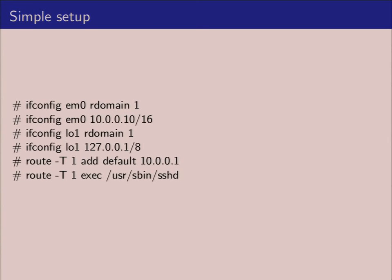We're taking the interface EM0 and declaring it will be part of R-domain 1. By default in OpenBSD, every single interface is in R-domain zero. The reason you set this first is that when you change the interface's routing domain, the question is: what do you do with the existing IP address? In OpenBSD, when you set the routing domain, it will erase all the existing configuration on the interface and remove all IP addresses. So always set the route domain first, then set the IP address.